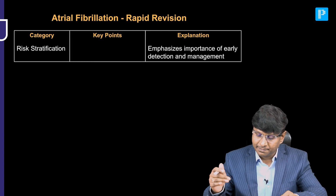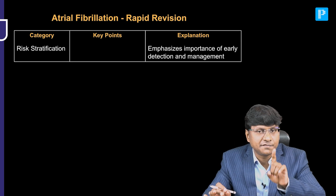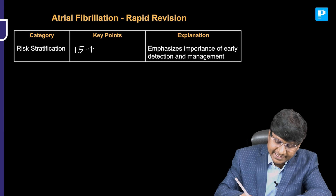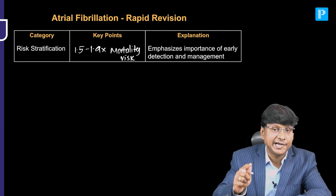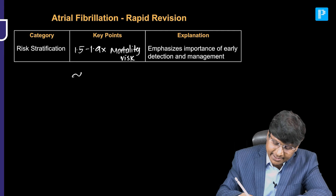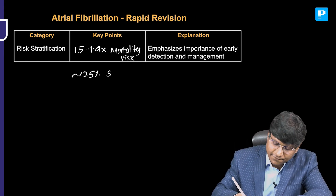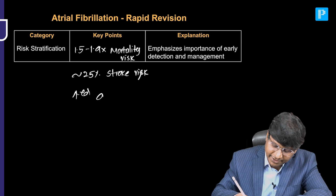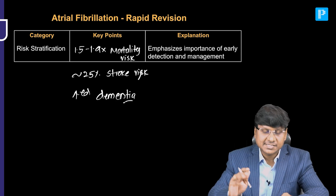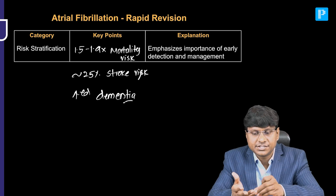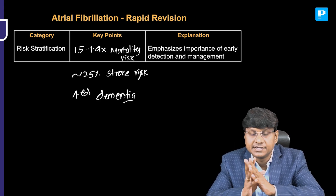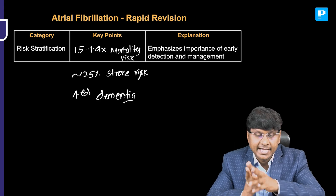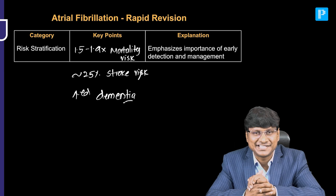Risk stratification in patients with AF: there is a 1.5 to 1.9 times mortality risk, and 25% chances of stroke risk are present. There is also an increased risk of dementia. In the next section, I will be discussing treatment, when to give anticoagulation, and the risk of bleeding with anticoagulation. Thank you very much.